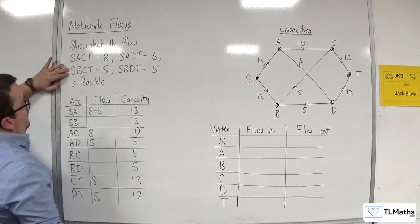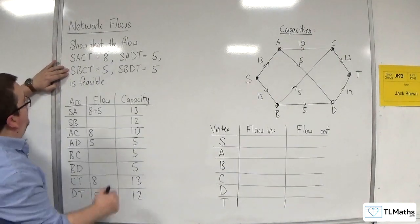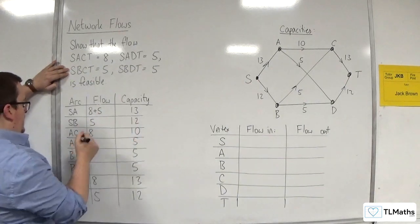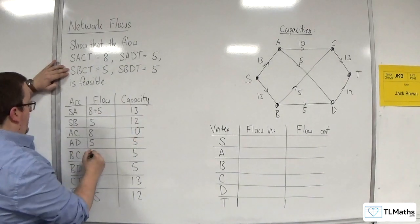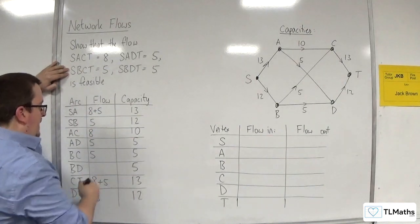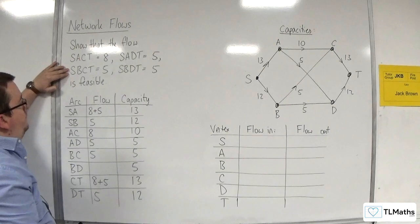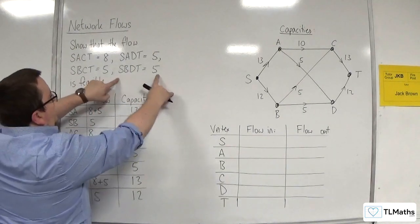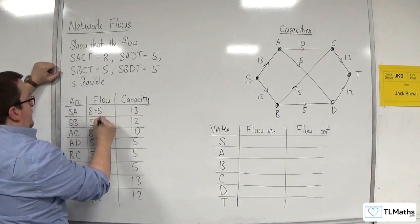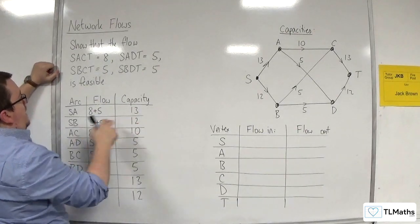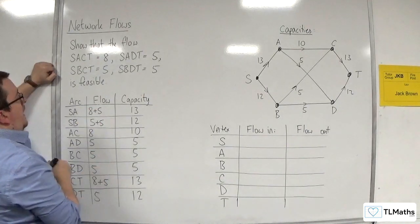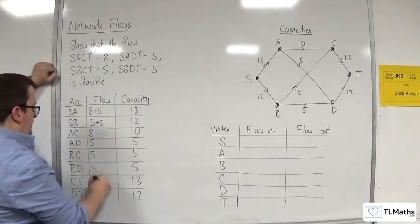Then we've got SBCT equals 5, so SB needs 5 — that's fine. BC needs 5, and CT needs 5, so 8 plus 5 gets us up to 13. Then SBDT equals 5, so SB gets another 5 — that's fine, that's 10. BD is going to get 5, and DT is going to have a 5.